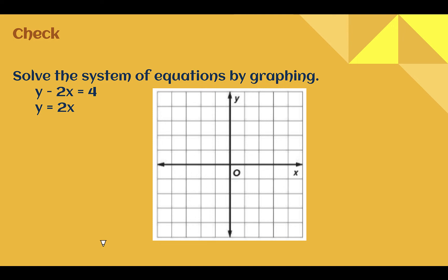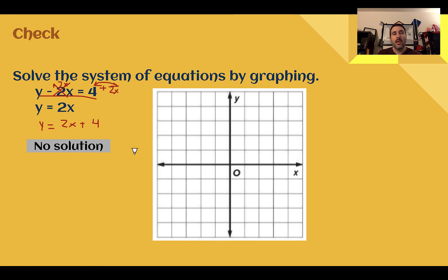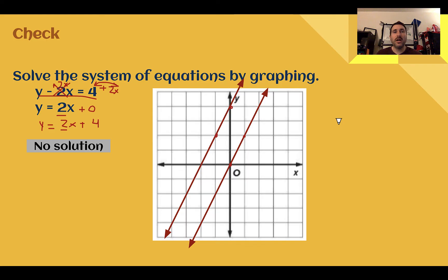Check your understanding: solve this system by graphing. The answer is no solution. Taking the top equation and rewriting it in slope-intercept form by adding 2x to both sides gives y equals 2x plus 4. This has the same slope as y equals 2x, but a different starting point, so the lines are parallel. Graphing confirms: y equals 2x has y-intercept 0, and y equals 2x plus 4 has y-intercept 4. They are parallel and do not intersect — there is no solution.